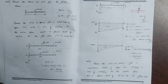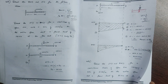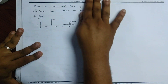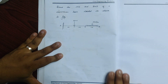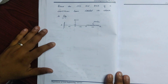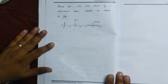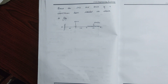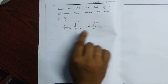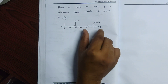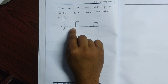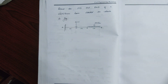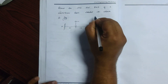Now let's go to the next problem. Draw the Shear Force and Bending Moment Diagram of a cantilever beam loaded as shown in the figure. There is a UDL and a point load variation. This is a previous university type question.